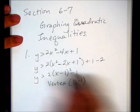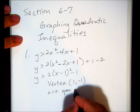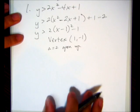My vertex is at (1, -1). My a is equal to 2, so it's going to be opening upward. My a is positive so it's going to open up. Let's graph this.